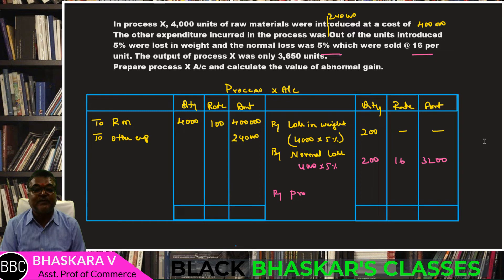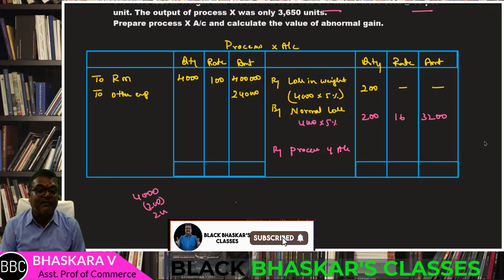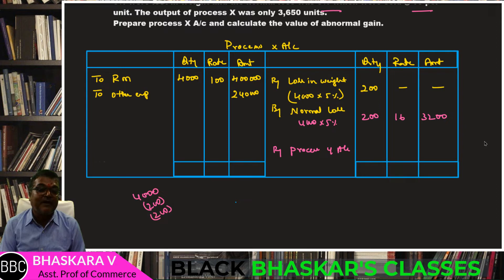Now let's prepare the process Y account. Input is 4,000 units. Weight loss is 200 units. Normal loss is 200 units, so totally 400 units lost. The expected output should be 3,600 units.